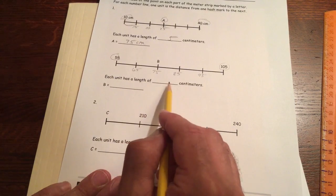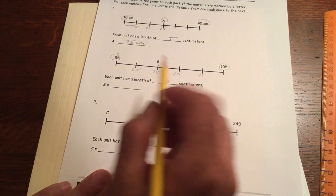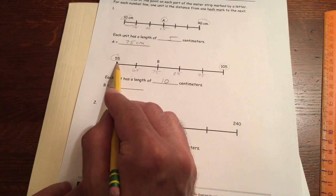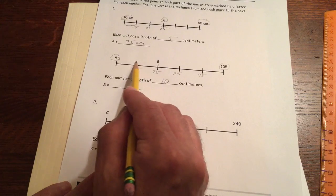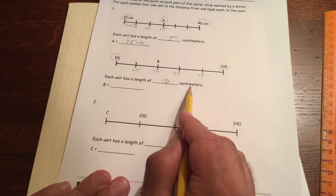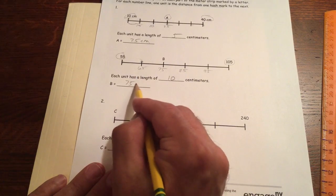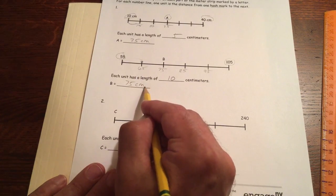Each unit has a length of 10 because this is a unit. In between the marks is a unit. That's a hash mark. That's a hash mark. It's 10 centimeters in between, and B is 75 centimeters.